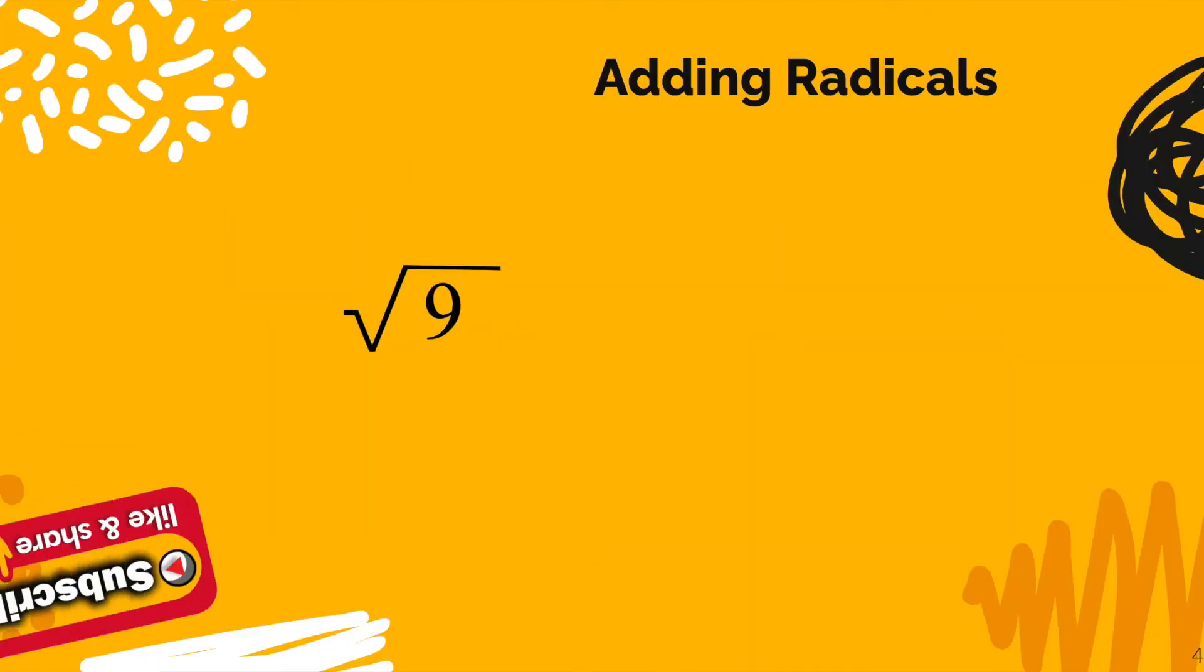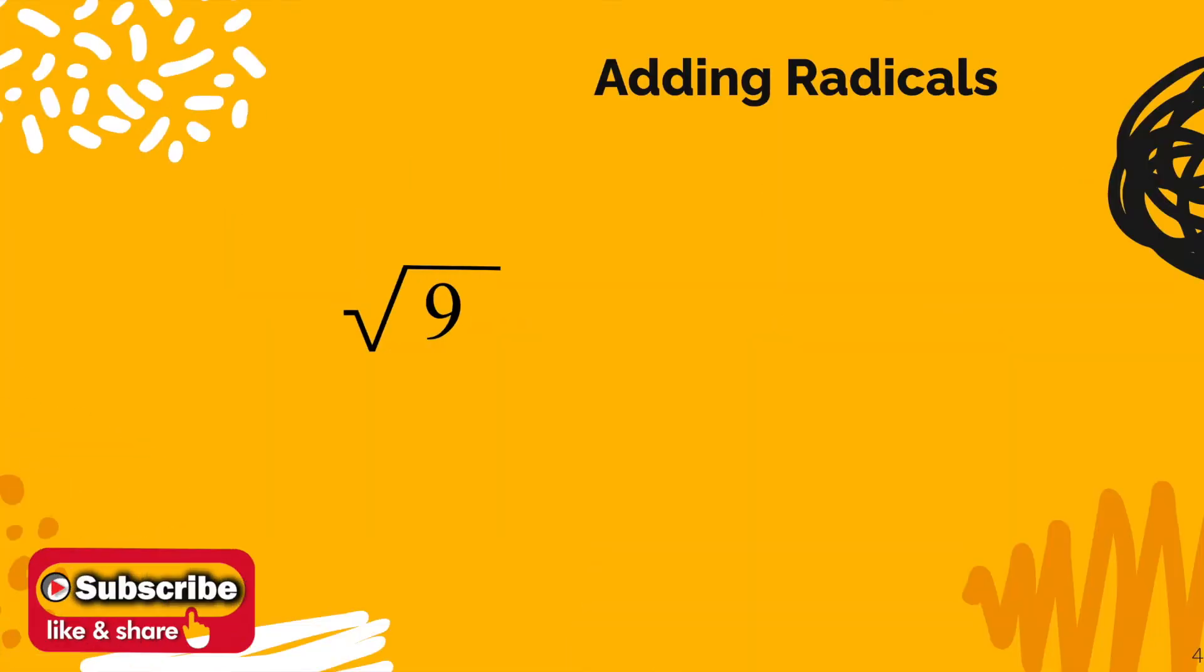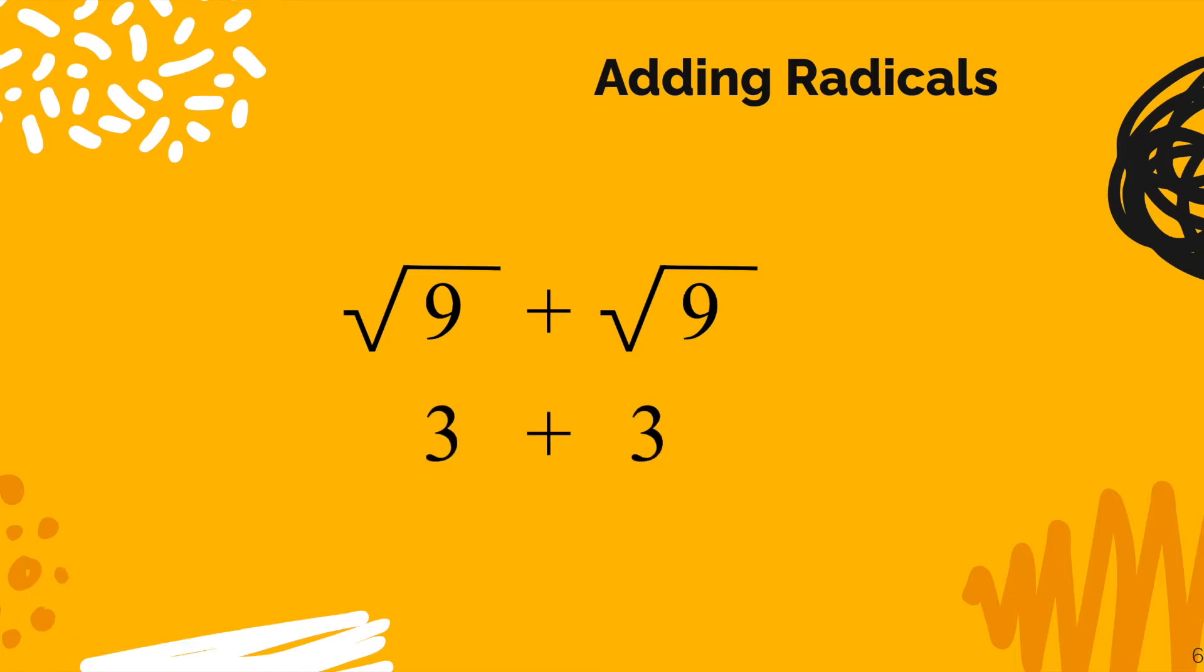As we begin our journey on understanding how to add and subtract radicals, let's start with something we know, the square root of 9. The square root of 9 is, of course, 3. And the square root of 9 plus the square root of 9 would be the same thing as 3 plus 3, which we all know is 6.